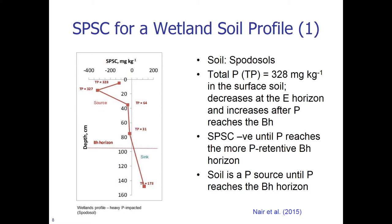Now let us look at the SPSC value for a wetland soil profile. The soils under consideration here are spodosols, and the total P is 328 milligrams P per kilogram in the surface horizon. Total P decreases at the E horizon and increases after P reaches the spodic horizon, that is the BH horizon. In this figure, positive SPSC is to the right and negative SPSC is to the left. SPSC is negative until P reaches the more P-retentive BH horizon, so the soil is a P source until P reaches the BH horizon.